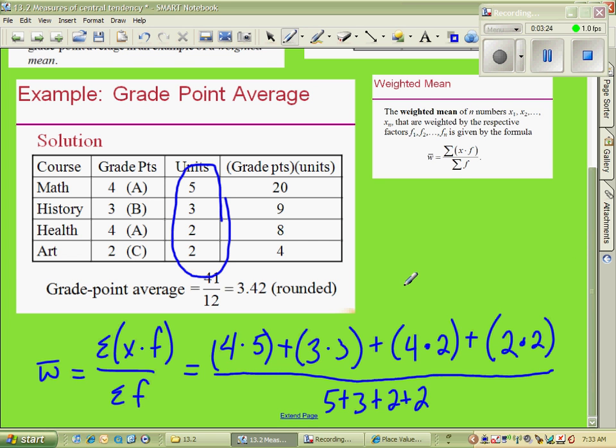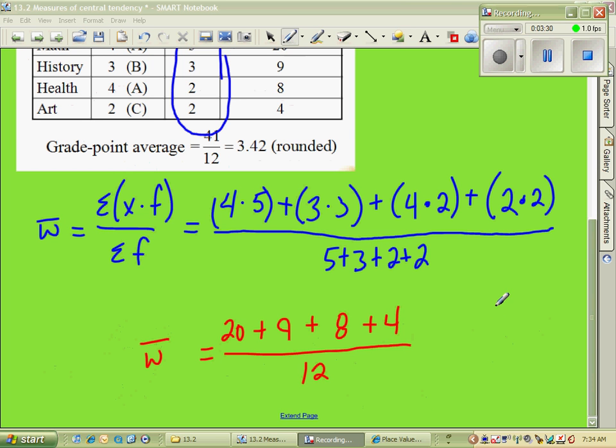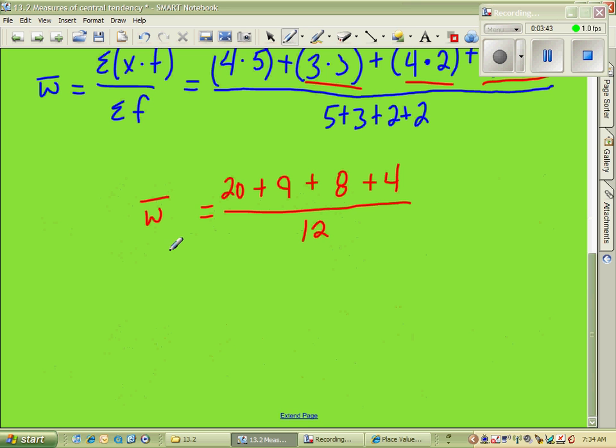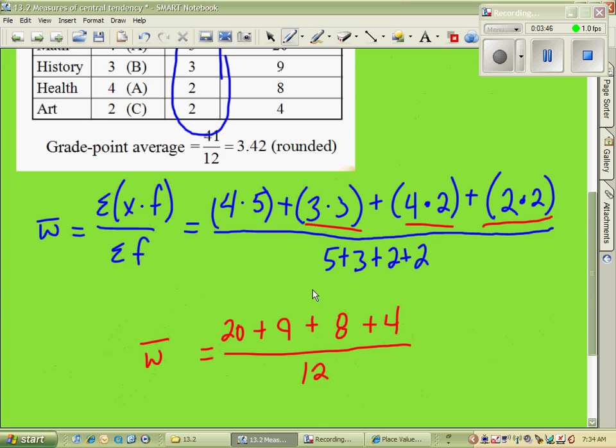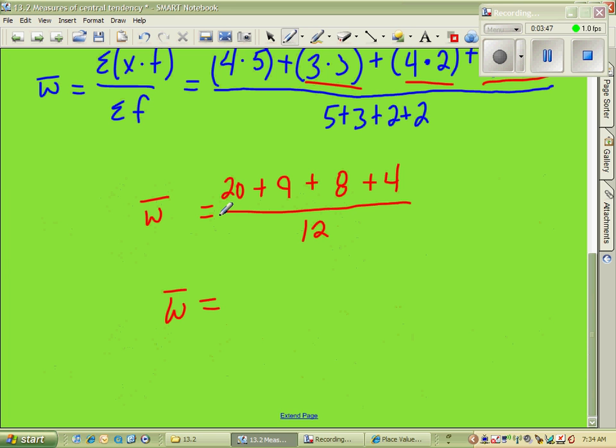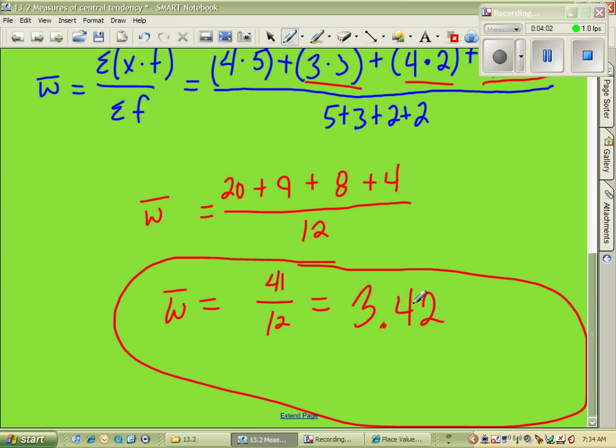Now we go through and simplify our formula. Our weighted mean at this point is 20 plus 9 plus 8 plus 4 divided by 12. One more step. That's going to be our weighted mean equals 41 divided by 12, which equals 3.42. So that's my GPA, my 3.42 GPA for that particular semester.